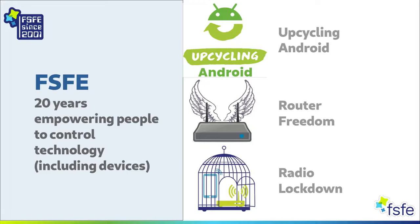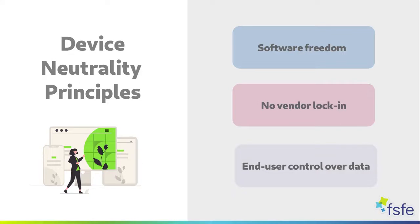Other successive activities, like router freedom and radio lockdown, refer to the hardware layer of net neutrality principles, and relate to what could be considered the first step for device neutrality from the perspective of telecommunications law. We wanted to consolidate the necessary principles to empower users to regain control of their devices. For us, device neutrality relates to safeguarding software freedom in devices, protecting users from vendor lock-in, and regaining control over data in devices. Free software and open standards are key to achieve these goals.